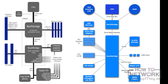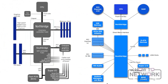Here is a diagram of the North Bridge and the South Bridge. You can see that graphics and memory are the only two things connected directly to the North Bridge, as well as the CPU — which makes sense because it requires the fastest communication.